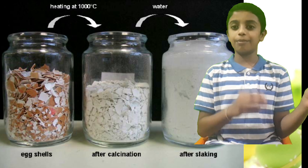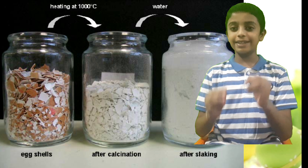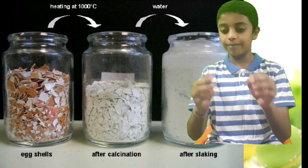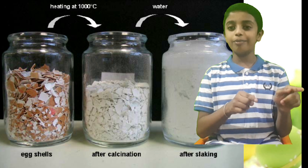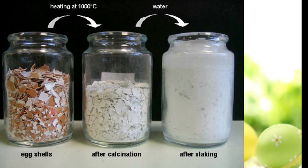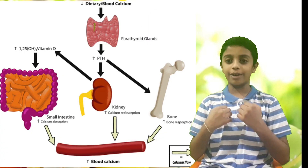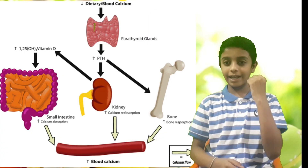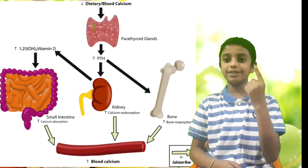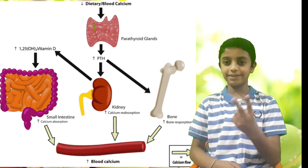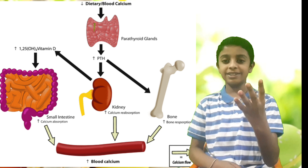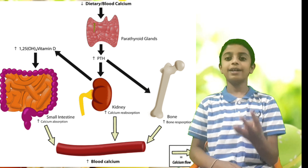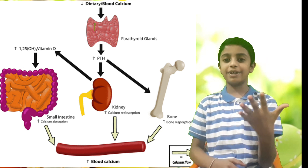Calcium carbonate is extracted from egg shells and bone marrow. Calcium is needed by our body for healthy bones and teeth, heart, nervous system, and muscles.